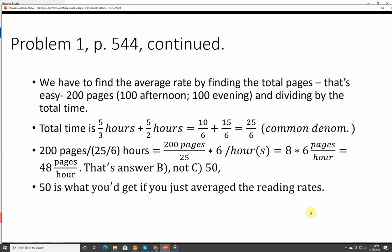We have to find the average rate by finding the total pages—that's easy, 200 pages—and dividing by the total time. Total time is five-thirds hours plus five-halves hours, which is 10 over 6 plus 15 over 6, because the common denominator is 6. That's 25 over 6. So 200 pages over 25 divided by 6 hours equals 200 pages over 25, which is 8, times 6 divided by hour. So we end up with 48 pages per hour. That's answer B, not C, which is 50. 50 is what you'd get if you just averaged the reading rates.